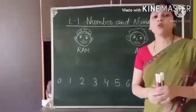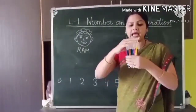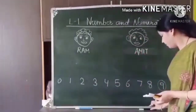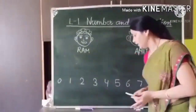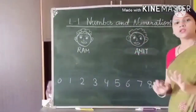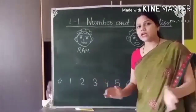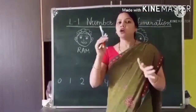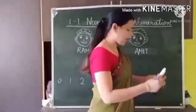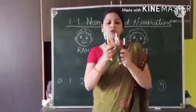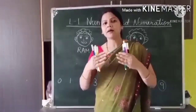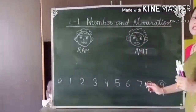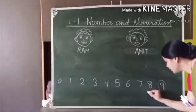Now we will check with 8 sketch pens. I distribute: 1, 2, 3, 4 — nothing is in my hand. Let's check: Ram got 1, 2, 3, 4 — that is 4 sketch pens. And Amit also got 1, 2, 3, 4 — 4 sketch pens. Both got the same number. So number 8 can be equally distributed among 2 boys. Put a tick mark here.